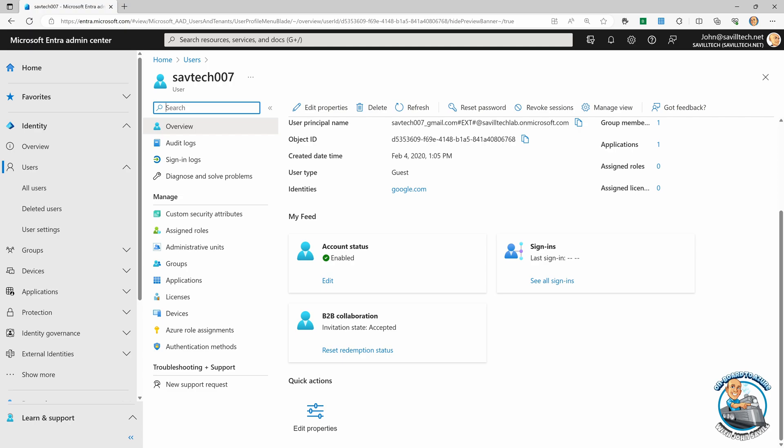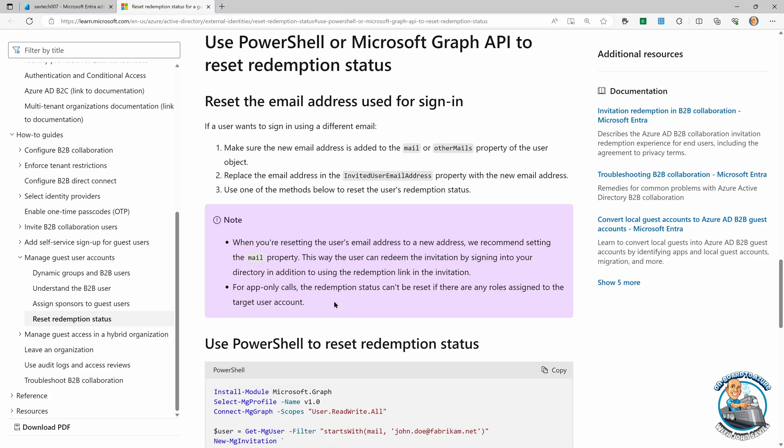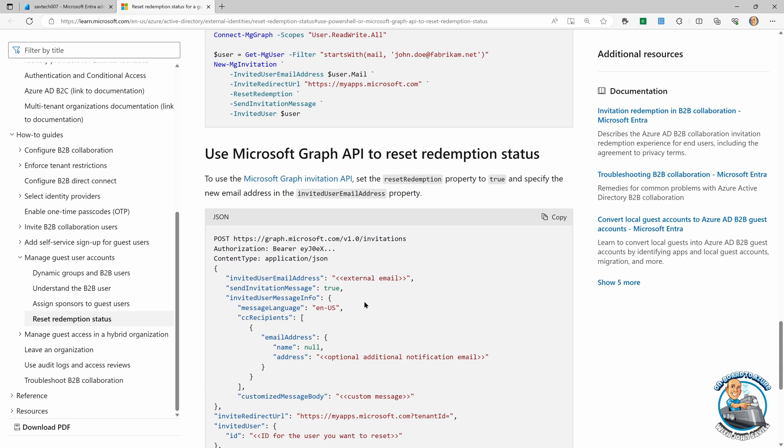Now you don't have to do it in the portal. You can also do it through PowerShell. You can do it through the Microsoft Graph.